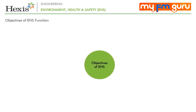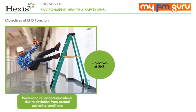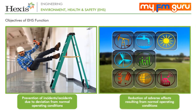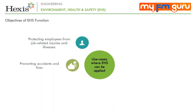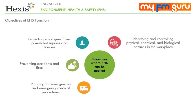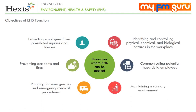EHS has two distinct objectives. First, prevention of incidents or accidents due to deviation from normal operating conditions. Second, reduction of adverse effects resulting from normal operating conditions. Some of the scenarios where EHS functions are helpful include protecting employees from job-related injuries and illnesses, preventing accidents and fires, planning for emergencies and emergency medical procedures, identifying and controlling physical, chemical and biological hazards in the workplace, communicating potential hazards to employees and maintaining a sanitary environment.